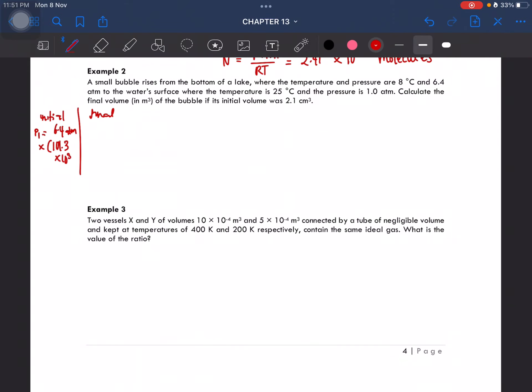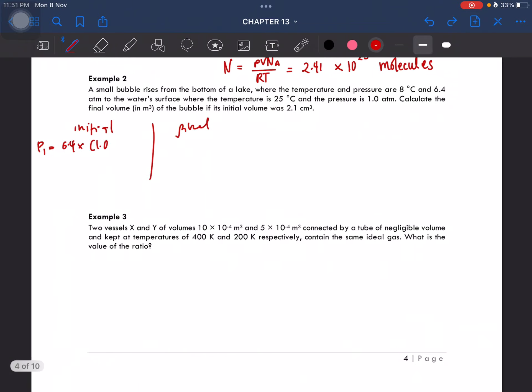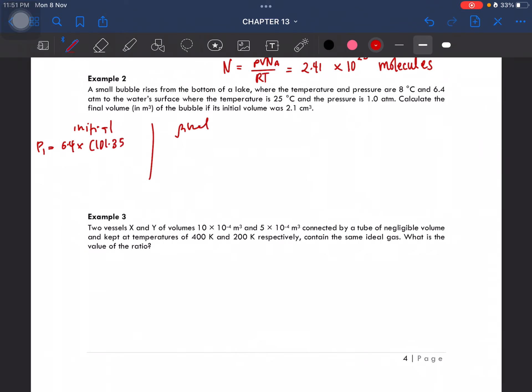Okay, so initial then final. The pressure is 6.4 atmospheres. We have to convert this into pascals: 101.3 times 10³, so you'll get the pressure is 6.48 times 10⁵ pascals. Then you have the initial volume given as 2.1 cubic centimeters, convert this to cubic meters: 10⁻⁶ cubic meters. And then we have the temperature which is 8 degrees Celsius, convert this to absolute temperature in Kelvin, that's 281.